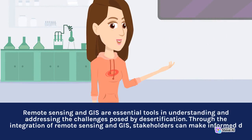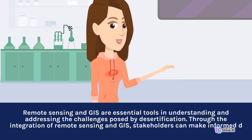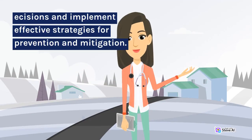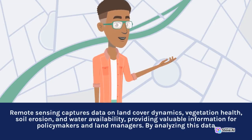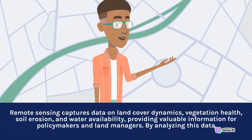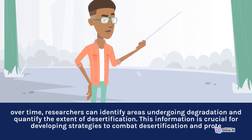Remote sensing and GIS are essential tools in understanding and addressing the challenges posed by desertification. Through the integration of remote sensing and GIS, stakeholders can make informed decisions and implement effective strategies for prevention and mitigation. Remote sensing captures data on land cover dynamics, vegetation health, soil erosion, and water availability, providing valuable information for policymakers and land managers. By analyzing this data over time, researchers can identify areas undergoing degradation and quantify the extent of desertification.